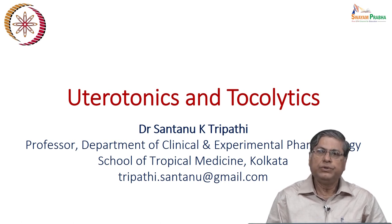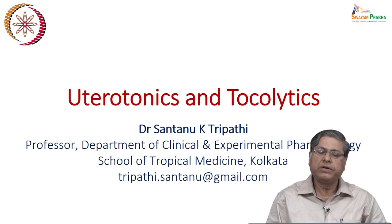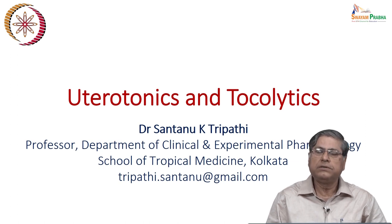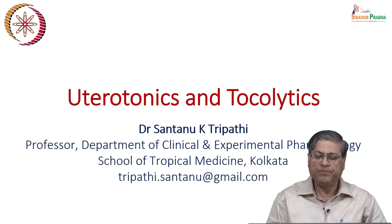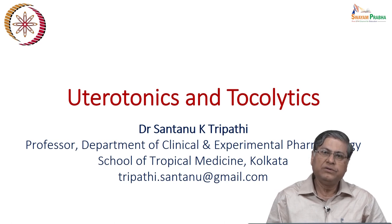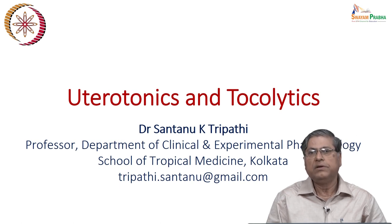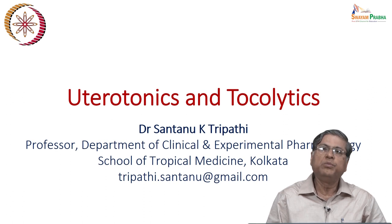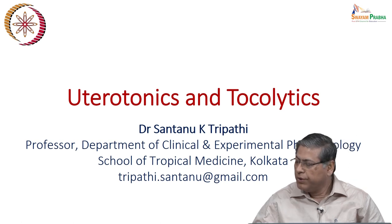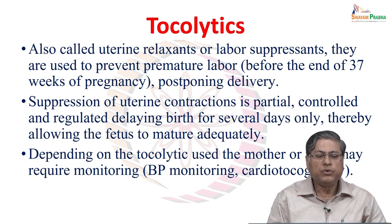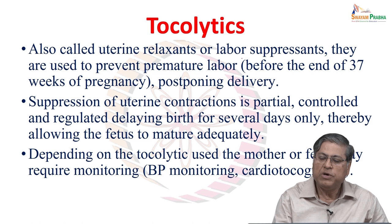We need drugs which can induce uterine contraction to stop bleeding. Basically, we are discussing drugs that either stimulate uterine contraction or prevent it. The first broad group — drugs that stimulate uterine contraction — are called uterotonic drugs. The drugs that cause uterine relaxation are called tocolytics or uterine relaxing drugs. We will first discuss the tocolytics, also called uterine relaxants or labour suppressants.